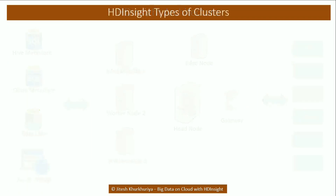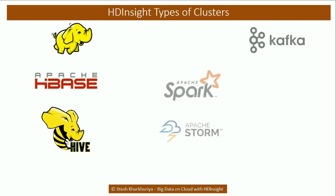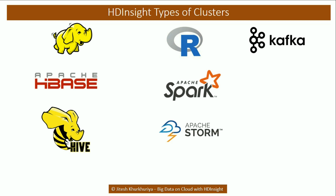Azure HDInsight offers various types of clusters on the cloud. You can provision a Hadoop cluster for batch processing, or if you need a NoSQL database you can provision an HBase cluster. For real-time streaming data, and depending on whether you require in-memory computation, you can provision either Kafka, Storm, or Spark. For statistical purposes and machine learning you can also use R Server. If you prefer Azure Machine Learning and need data made available through interactive and faster queries, you can provision an HBase or interactive query cluster.